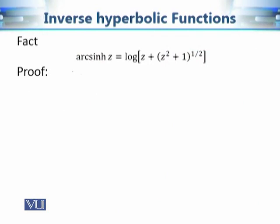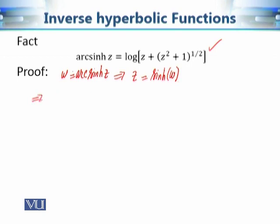Now let us see why we define arc sine hyperbolic z in this way. We should be able to derive it from the definition of sine hyperbolic z. Let us assume arc sine hyperbolic z is equal to w. Since w is the inverse of sinh(z), applying sinh to both sides gives z equals sine hyperbolic w.